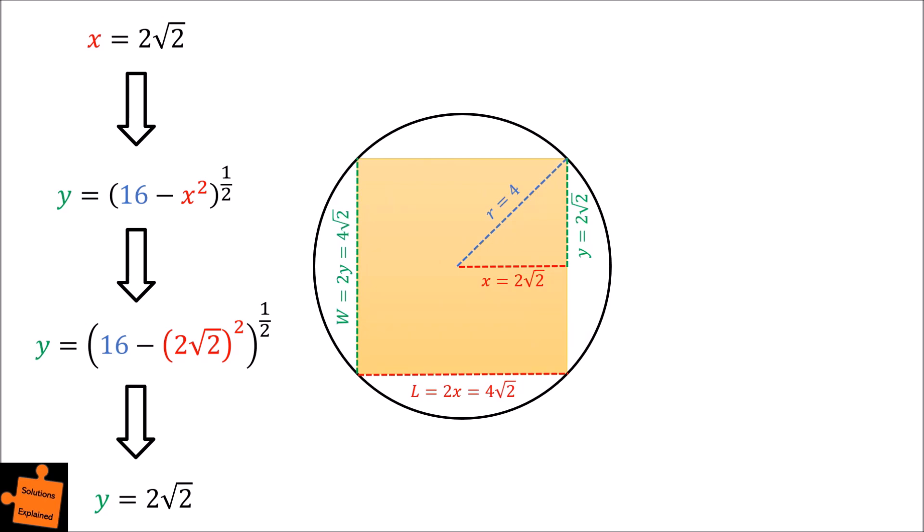This square will have side length 4 root 2, and thus the area of our square will be 4 root 2 multiplied by 4 root 2. This gives an area of 32. This is the final answer to our question.